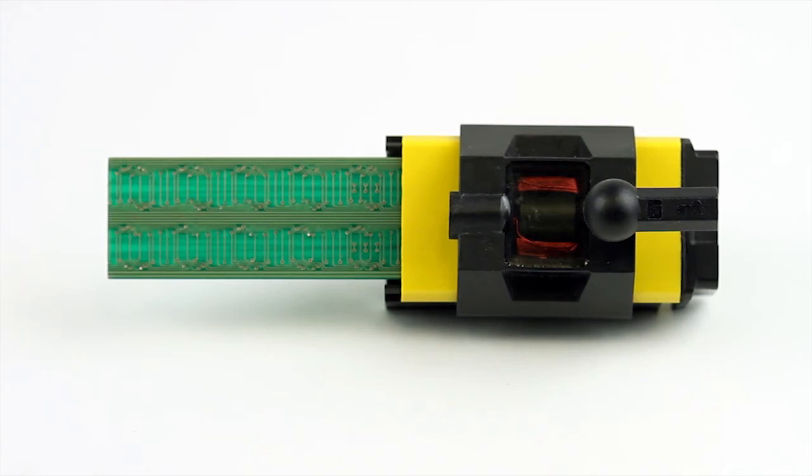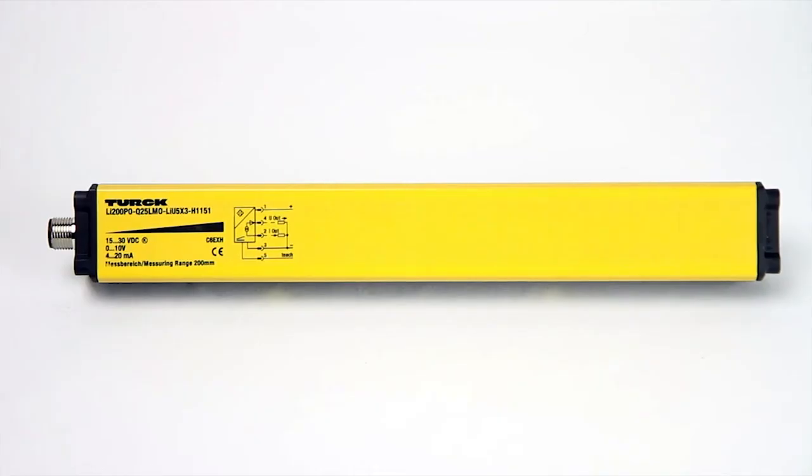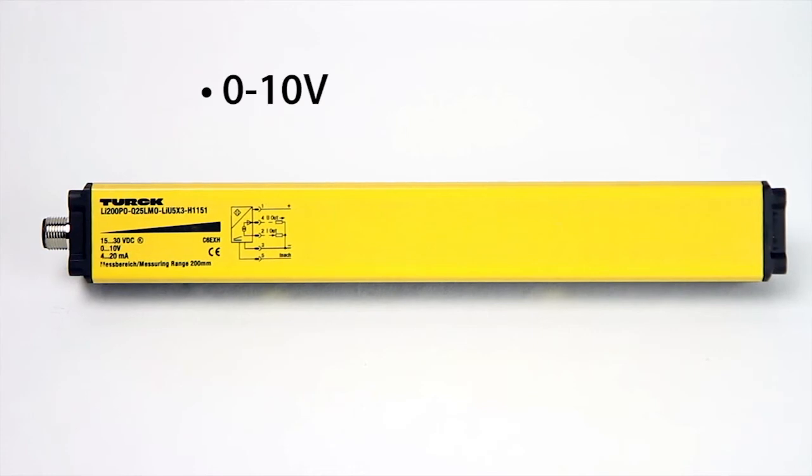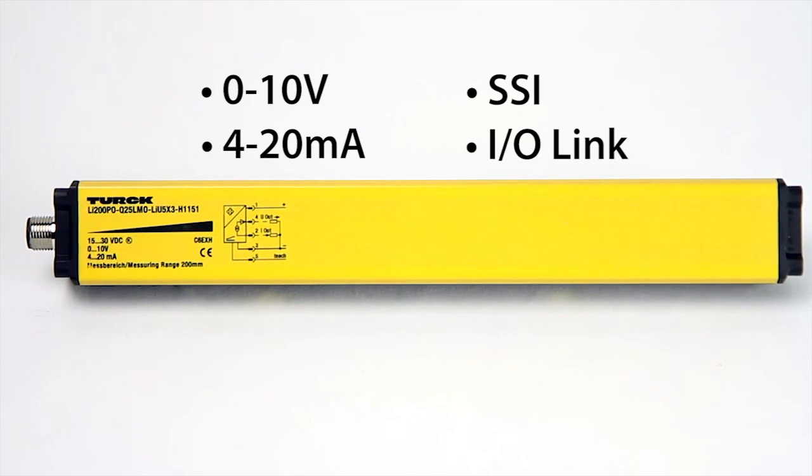Utilizing this inductive RLC circuit allows for faster and more accurate readings over many common output types, such as 0-10 volts, 4-20 milliamps, SSI, or IO-Link, as well as smaller overall packages.